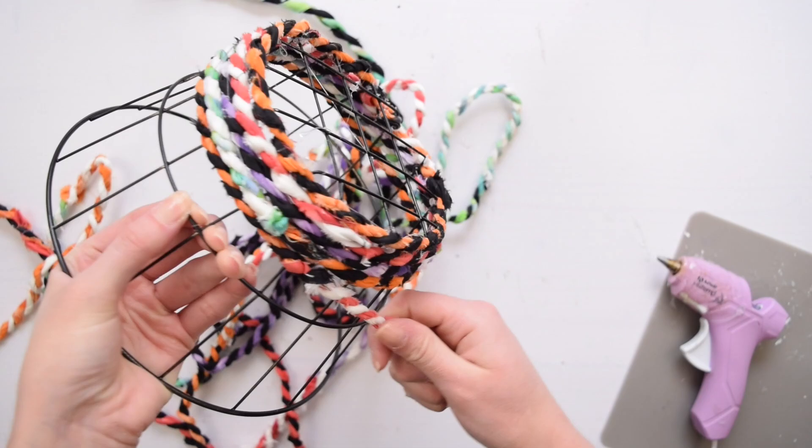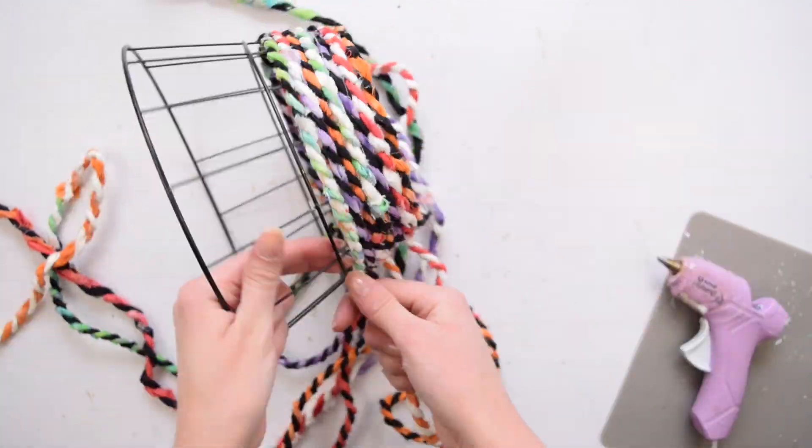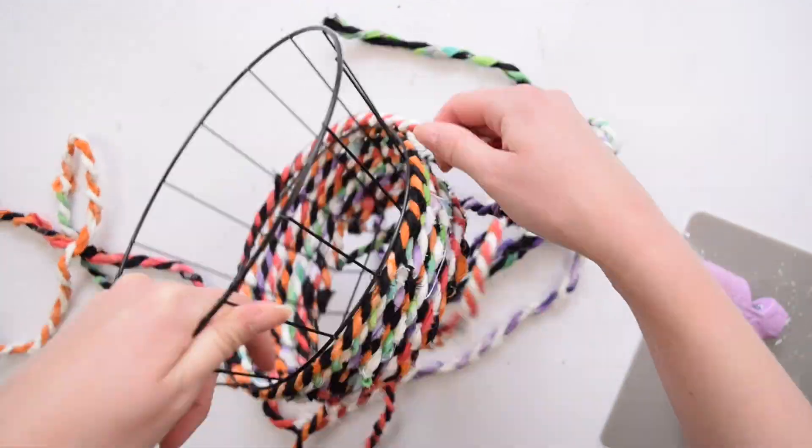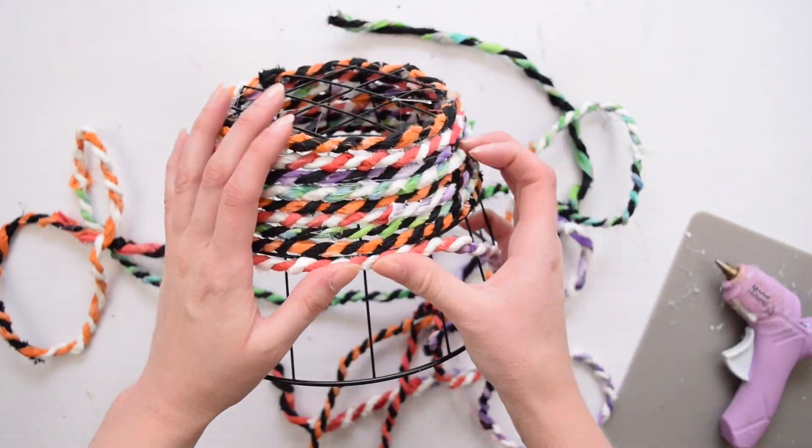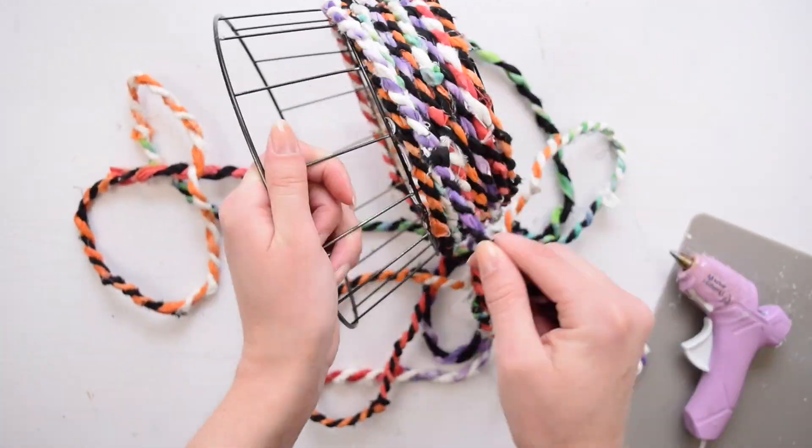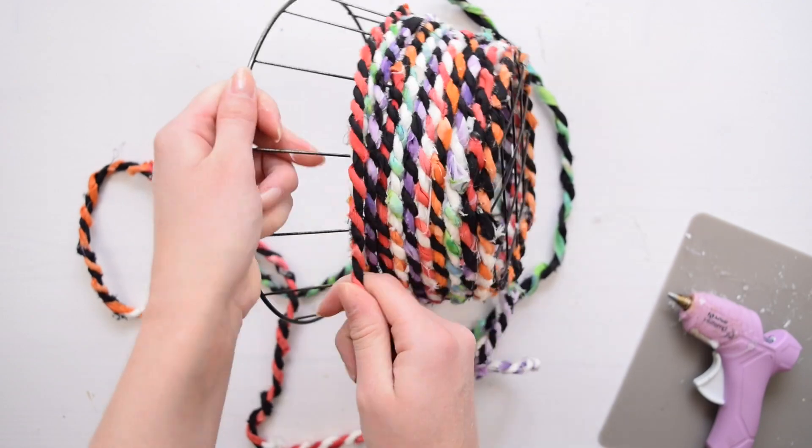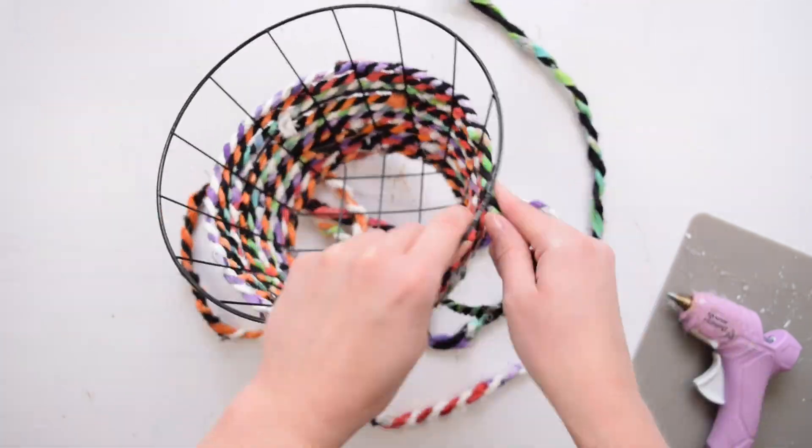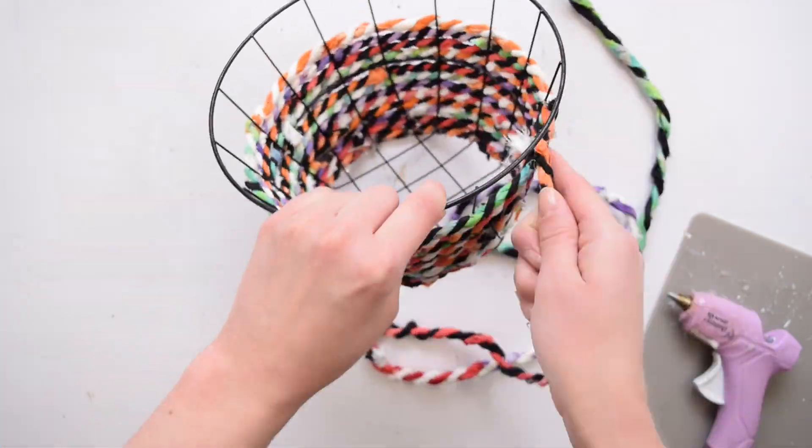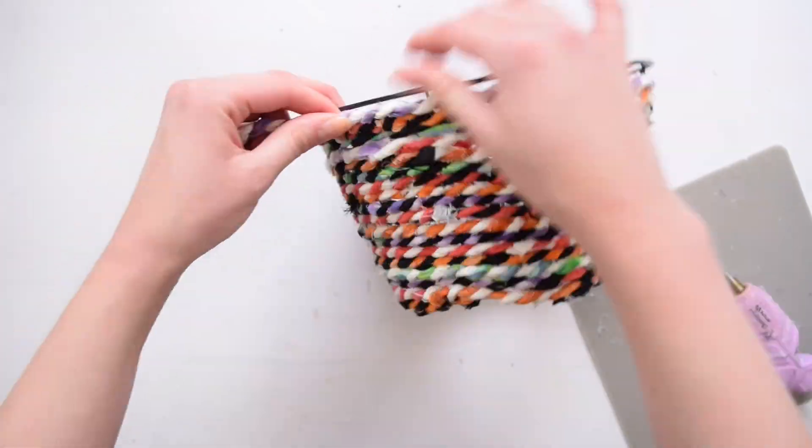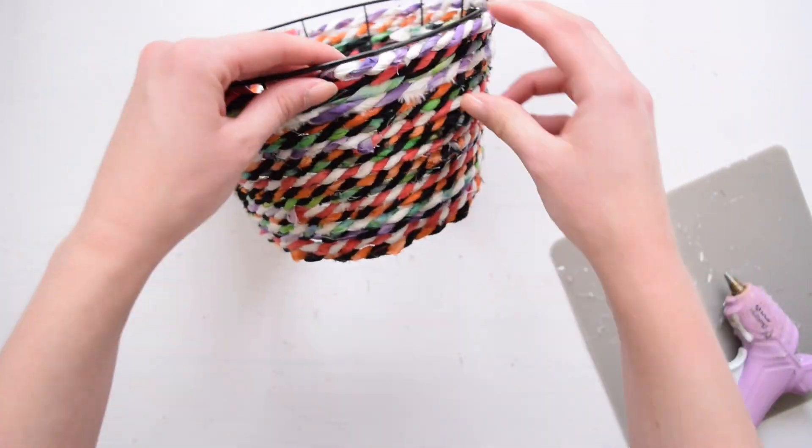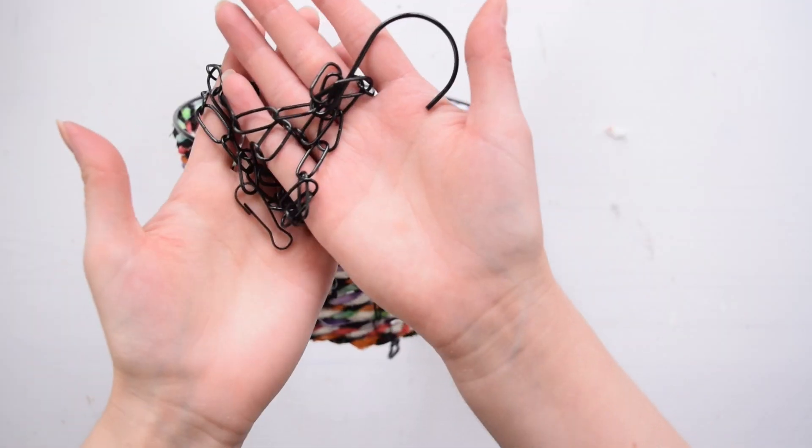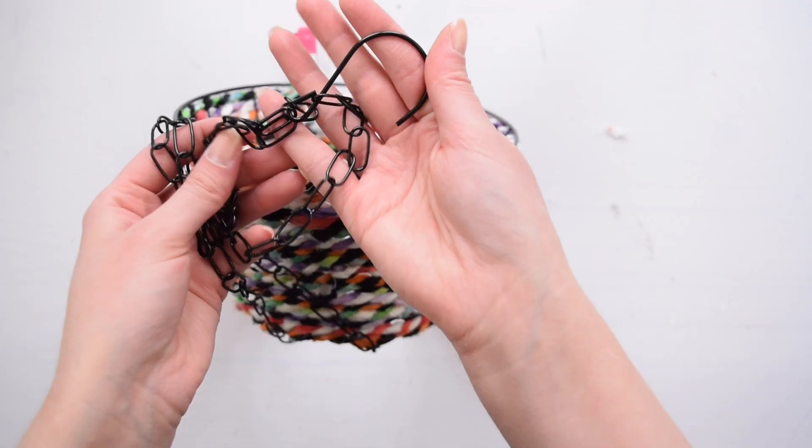At the midway point where that cross section is I also did add some more hot glue that would just add a little extra security halfway through and then continue to wrap it all the way up the rest of the basket.